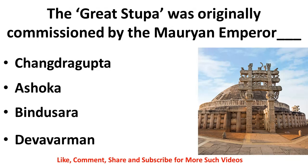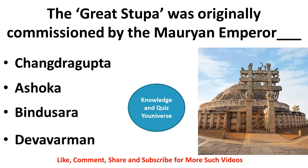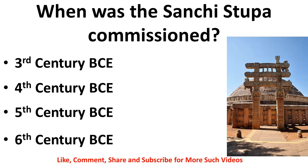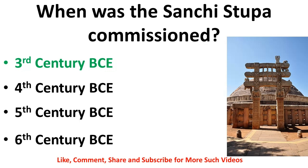The Great Stupa — Sanchi Stupa — was originally commissioned by which Mauryan Empire emperor — Chandragupta, Ashoka, Bindusara, or Deva Varma? The correct answer is Ashoka. Ashoka was the Mauryan emperor who commissioned the Great Stupa, the Sanchi Stupa. When was it commissioned — 3rd century BC, 4th, 5th, or 6th century BC? The correct answer is the 3rd century BC.